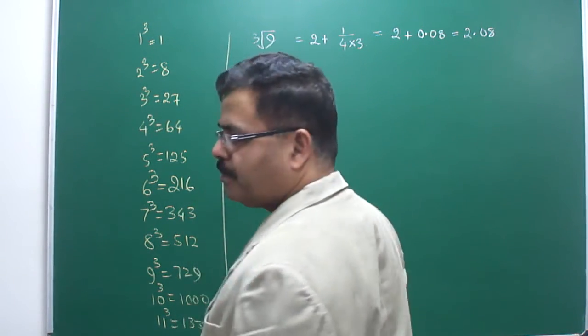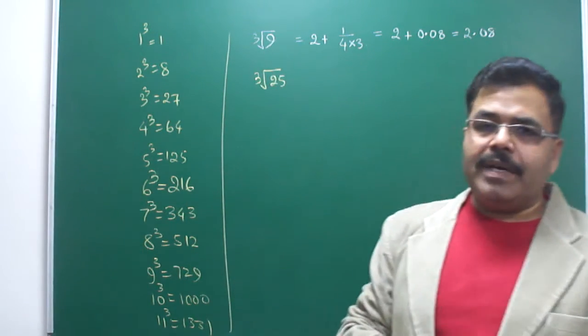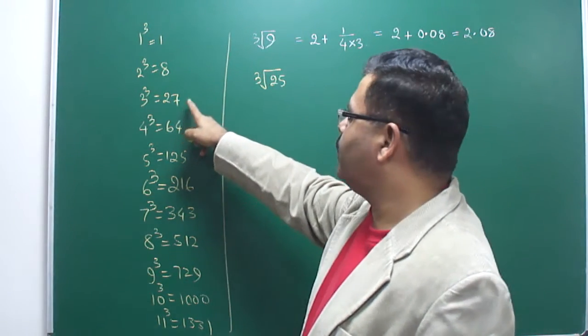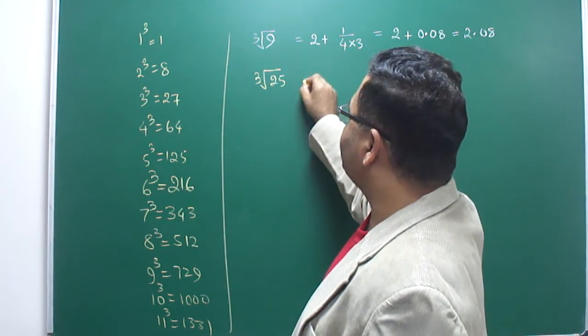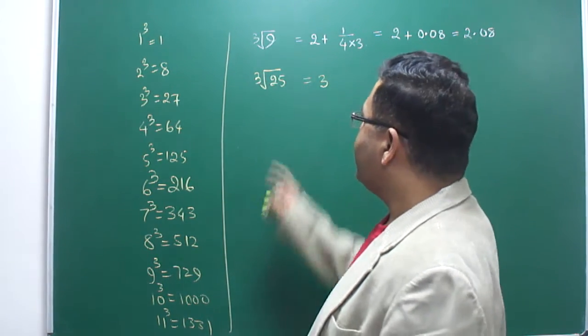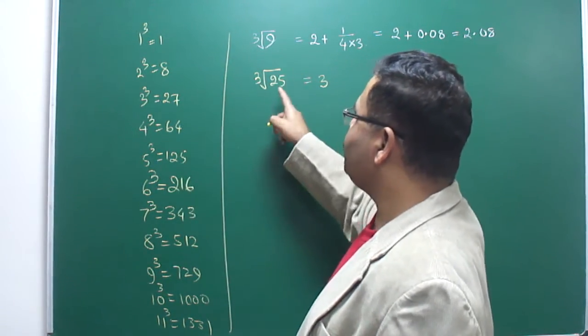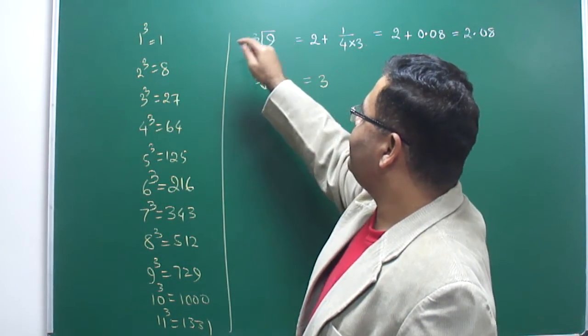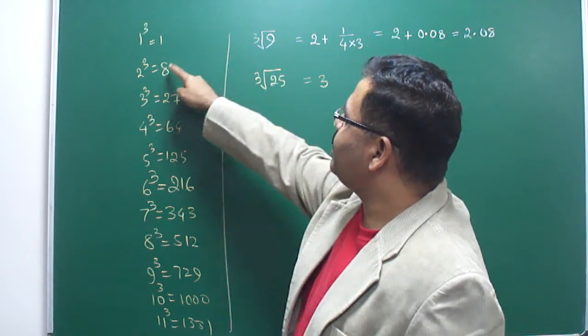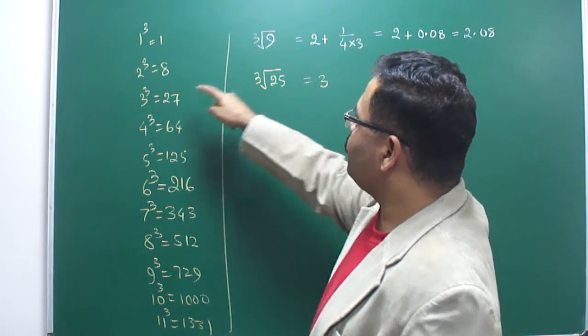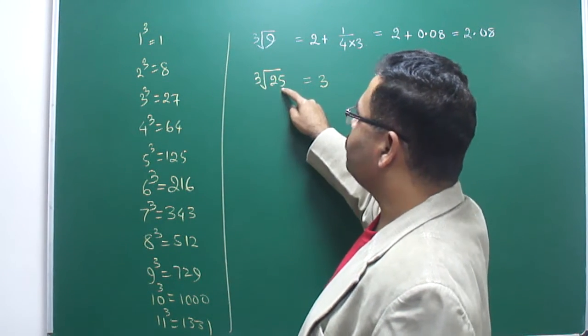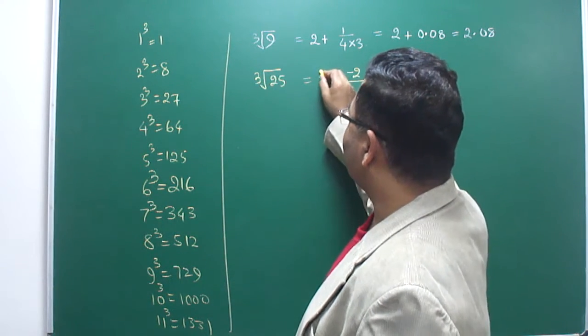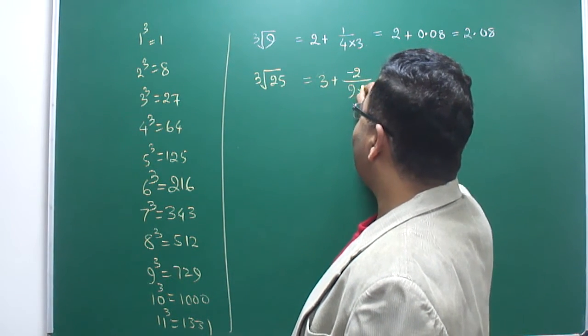Now let me discuss another number: cube root of 25. This number is closer to 27. We will select the closer number, which is 27. So cube root of 27 is 3. Now, 25 minus 27—you have to subtract this reference number from this number. What I did before: 9 minus 8 was positive 1. Now 25 minus 27 is minus 2.